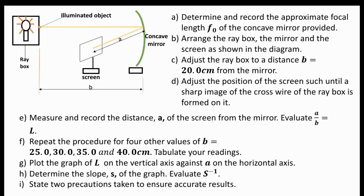Adjust the ray box to a distance b equal to 20 centimeters from the mirror. Adjust the position of the screen until a sharp image of the cross-wire of the ray box is formed on it. Measure and record the distance a of the screen from the mirror. Evaluate a over b, which equals l. Repeat the procedure for four other values of b: 25, 30, 35, and 40 centimeters respectively.